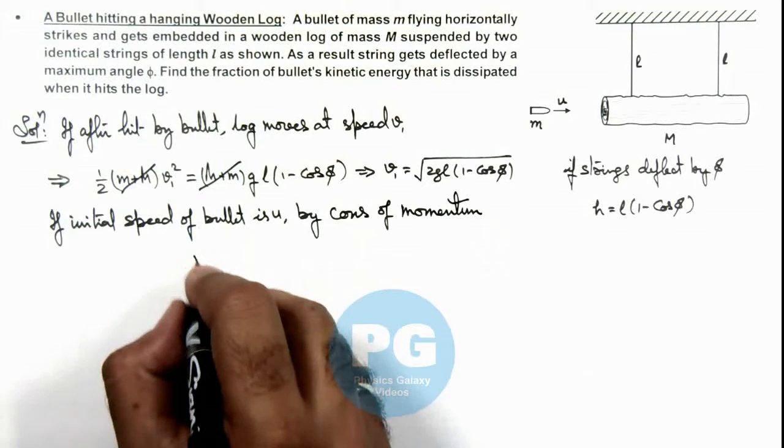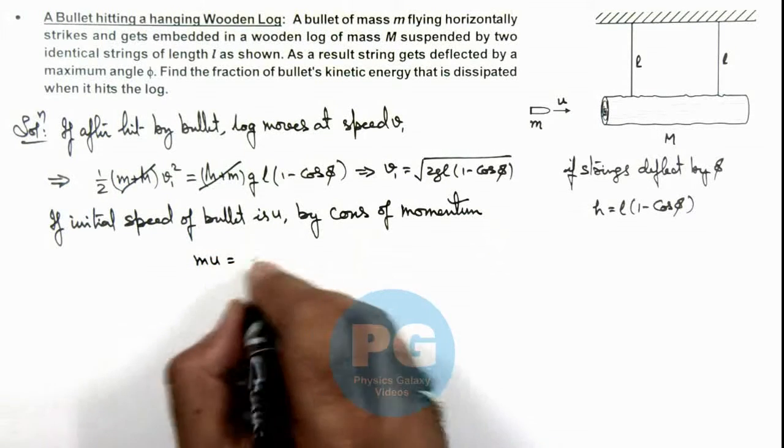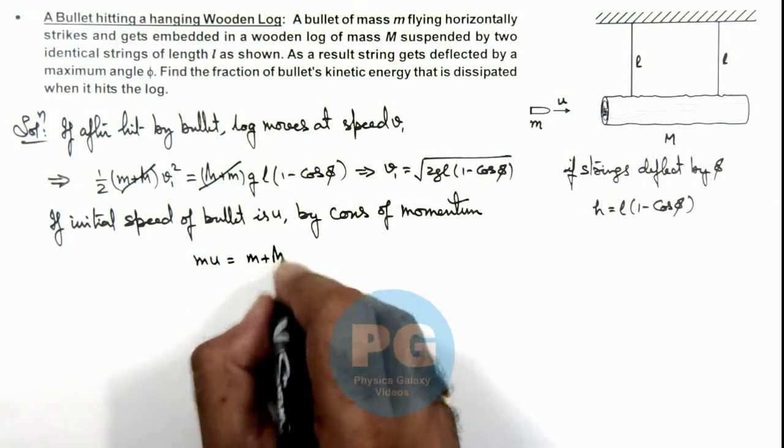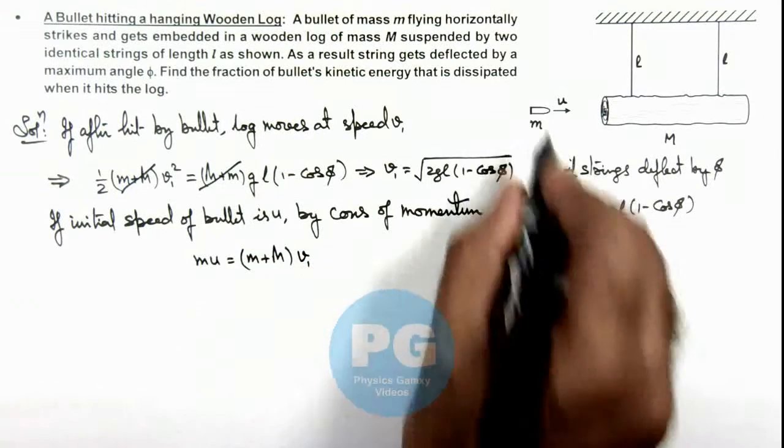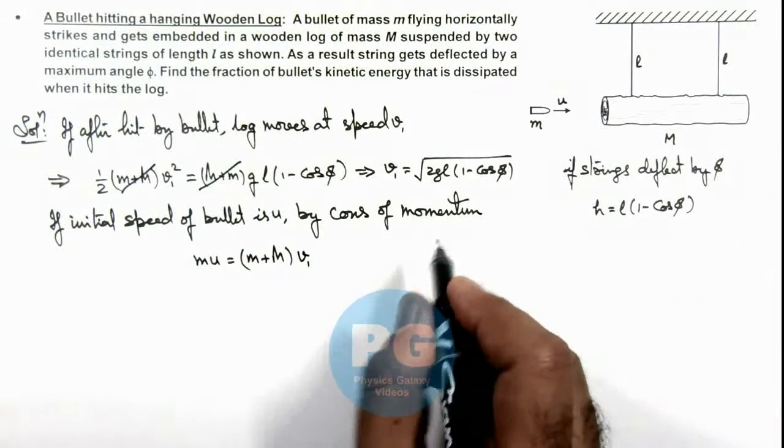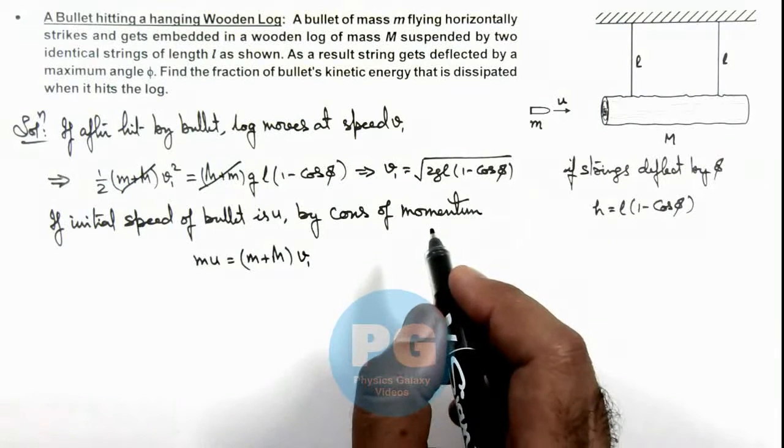Here we can write mu is equal to (m + M)v₁ because the bullet gets embedded in the block and finally it moves with a velocity v₁.